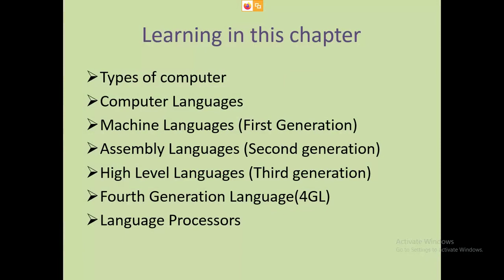In this chapter, what we are going to learn: types of computer, computer languages which we use in computers, then machine languages, assembly languages of second generation, high level languages which we use in third generation, then fourth generation languages, 4GL, and language processors.